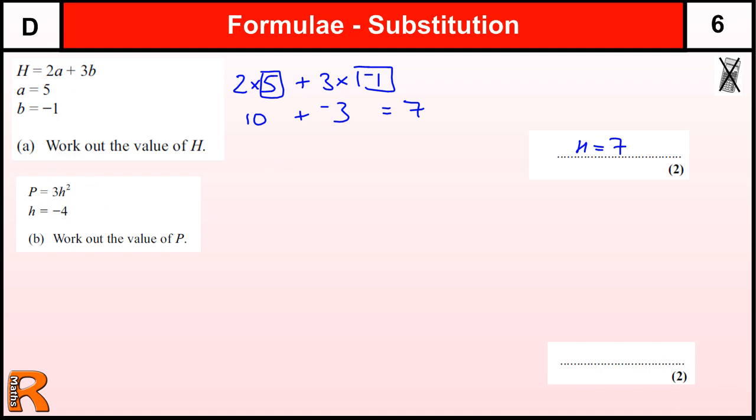Another formula here, P equals 3h squared. This is testing you know how to do the order of things. We've not got a calculator to help us, so we've got to be careful how we do things here. h is minus 4, also testing that you can multiply negative numbers. Again, I'm going to cover up the P, because that's what we're going to work out.